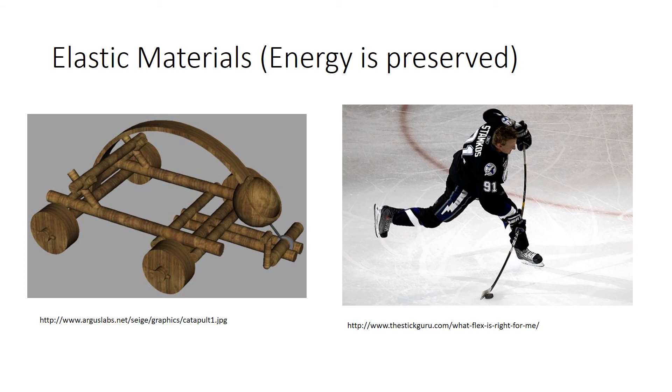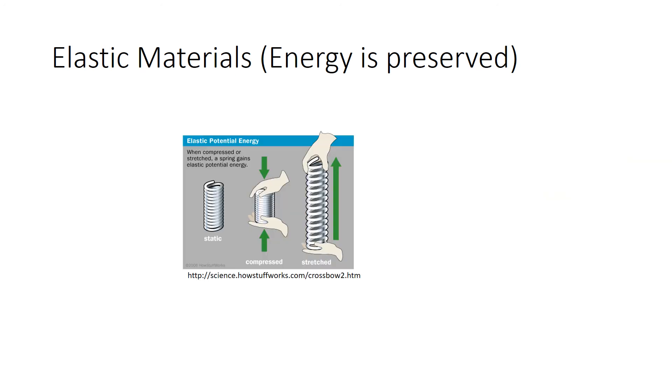Humans capitalize on elastic materials by deforming them and storing this elastic energy and then using the energy to induce motion. A catapult stores elastic energy that can later be used to launch a projectile. A hockey stick is flexed and the energy is then used for a slap shot. Springs store elastic energy that can later be used once the spring is released.